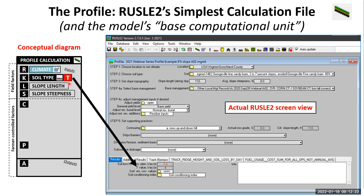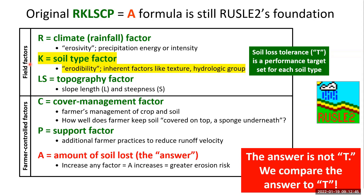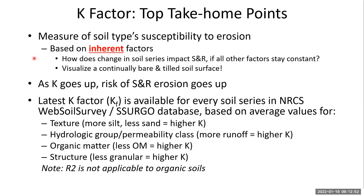When you select your soil type, RUSLE2 will also then know your T values — it may show up in different places on different screens. What do these terms mean? What is soil type factor, erodibility, inherent factors? How does this relate to the real world? Let's dig into that.